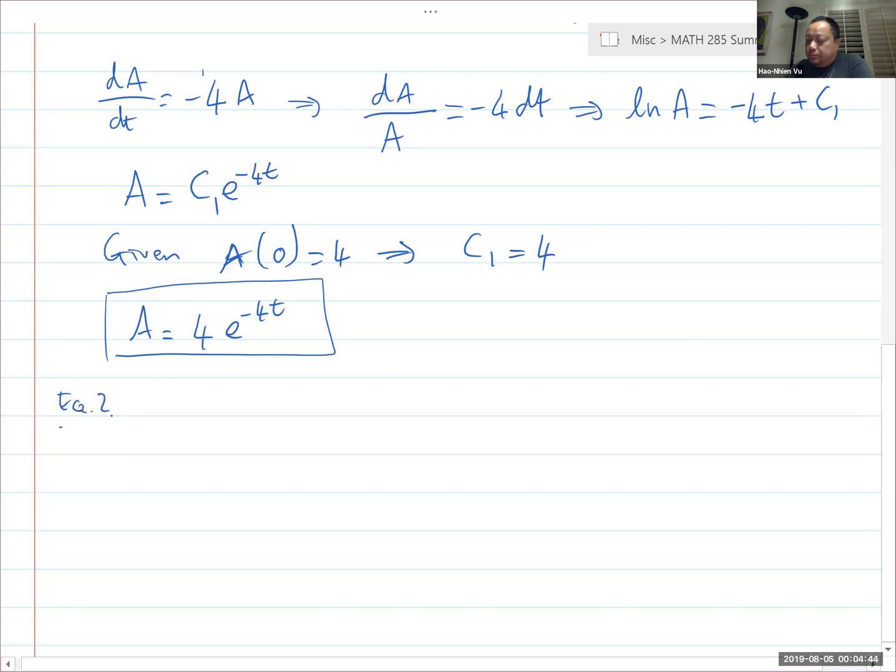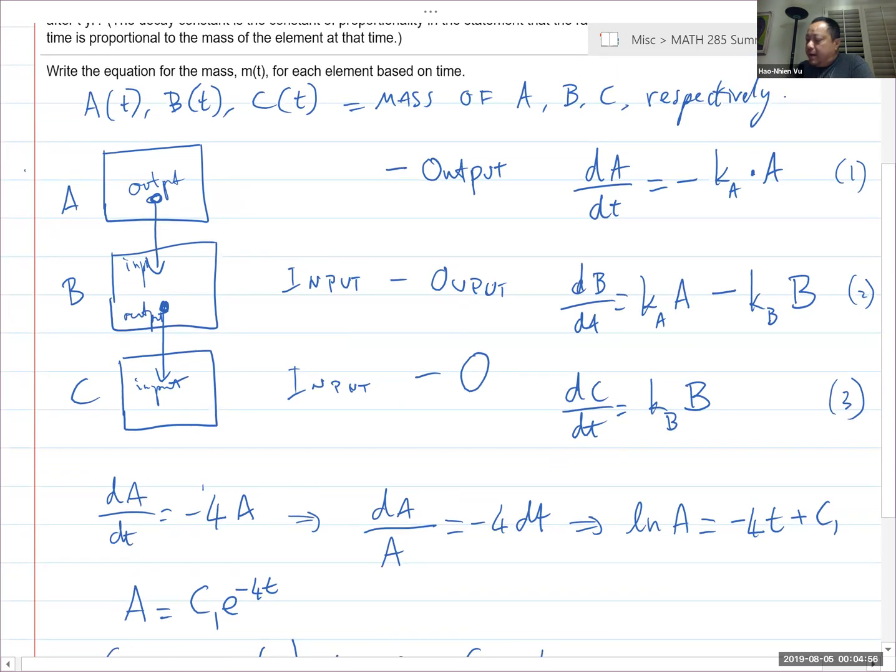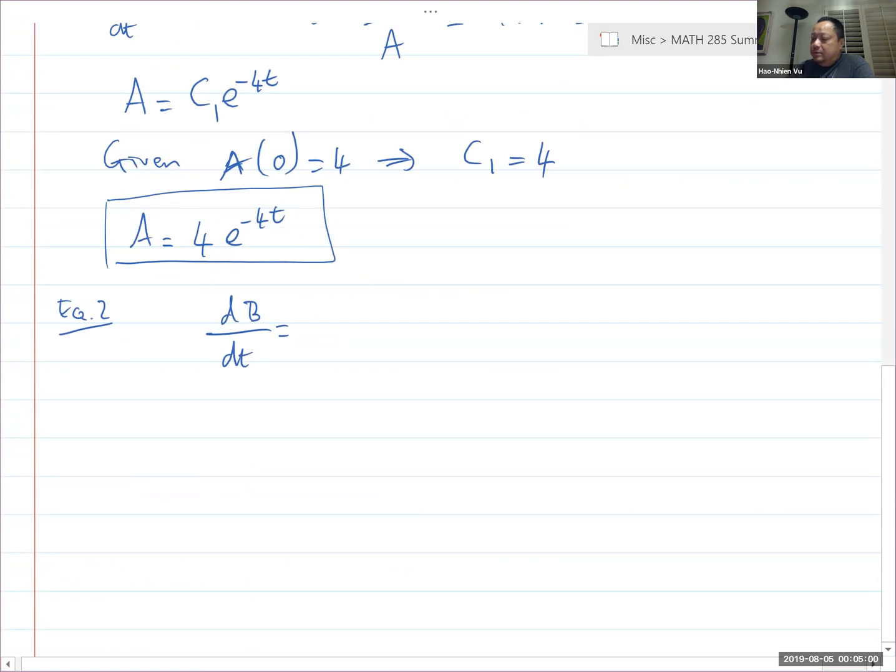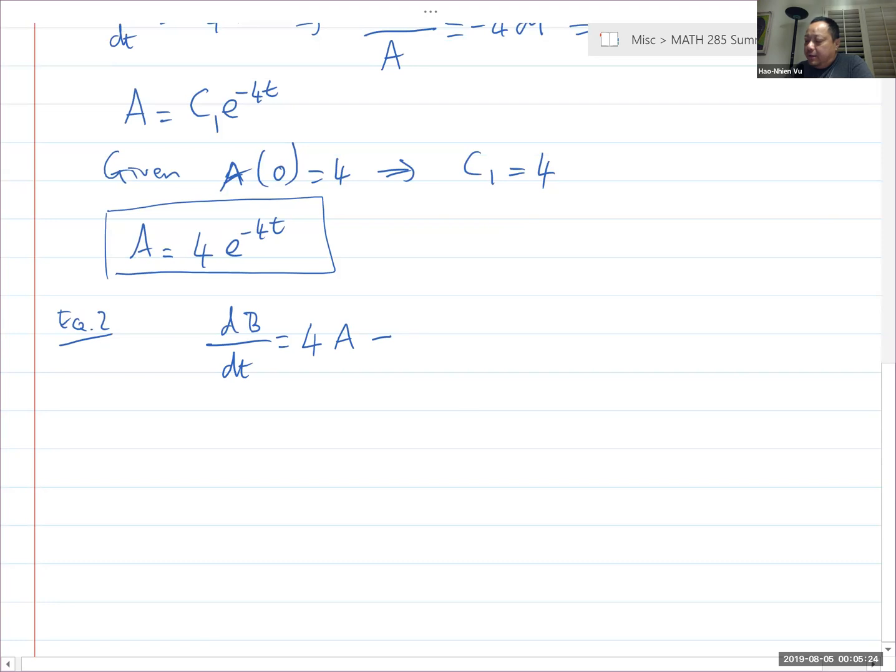All right. Now equation two. dB/dt is equal to K_A of A minus K_B of B. K_A of A, K_A, let me write that in. K_A of A minus K_B. K_B is equal to, let me circle it so I don't have to go look for it all the time. K_A is four and K_B is three. K_A of A minus K_B of B. And A I already have: A is 4e^(-4t). So 16e^(-4t) minus three B.